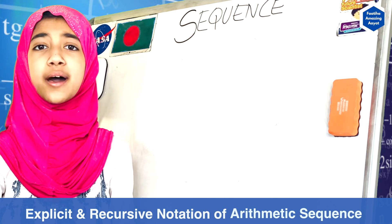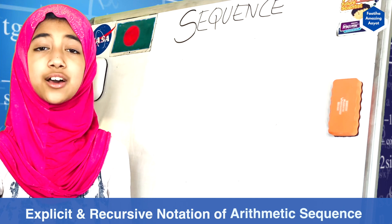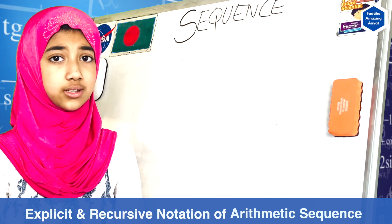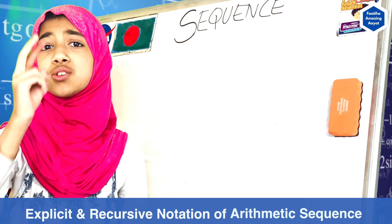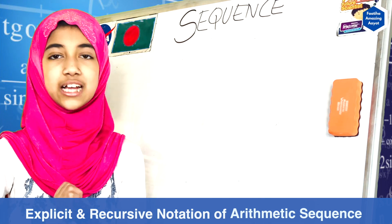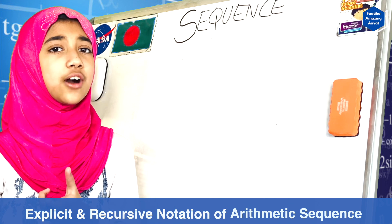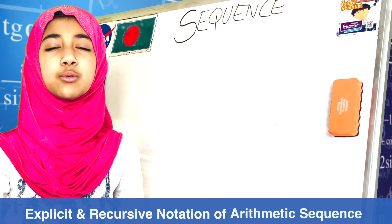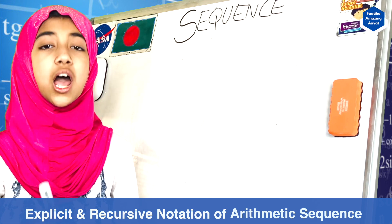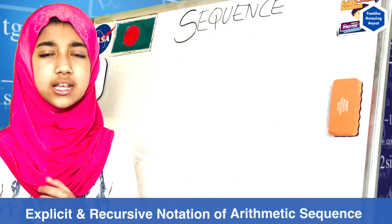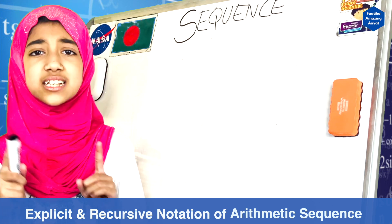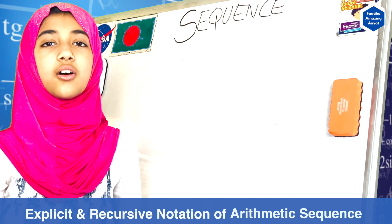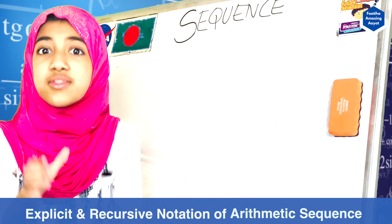In some of my other episodes I have shown you how to figure out equations and functions. Today I will show you how to figure out sequences. We know that there are two types of sequences: there are arithmetic sequences and geometric sequences. First I will explain to you what these two are, and then I will show you the explicit and recursive ways of writing the arithmetic sequence. In one of my next videos I will show you the explicit and recursive for the geometric sequence.